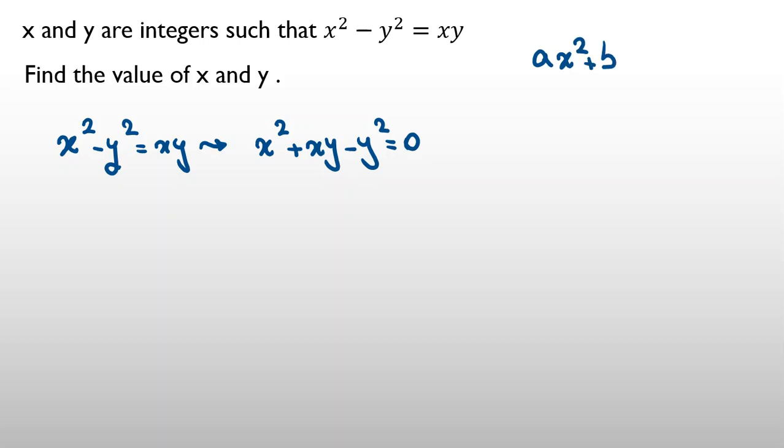It means what? If we have ax squared plus bx plus c equals zero, then x equals negative b plus or minus square root of b squared minus 4ac, all over 2a.